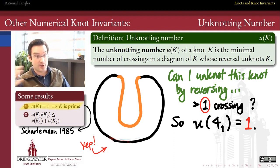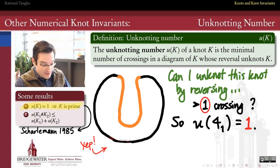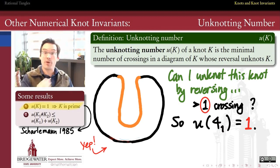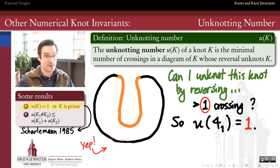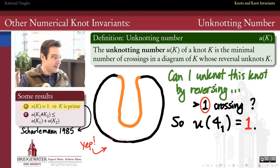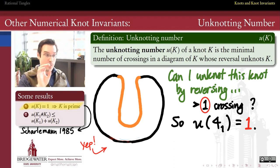Some known results about unknotting numbers: if the unknotting number of a knot is one, as in the figure eight knot example we just saw, then that knot must be a prime knot. This is a super useful result — it gives us a way of detecting whether a knot is prime, which is generally a hard problem. Not every prime knot necessarily has unknotting number one, but any knot with unknotting number one is guaranteed to be prime. That proof was done in the 1980s by Scharlemann.